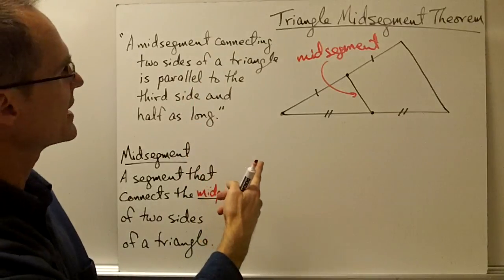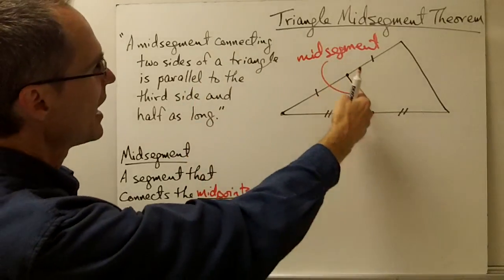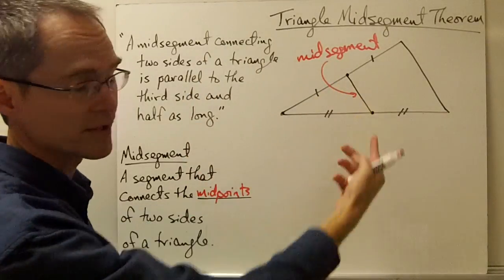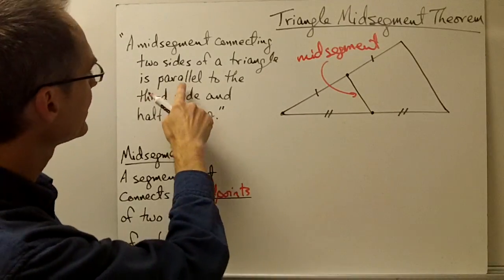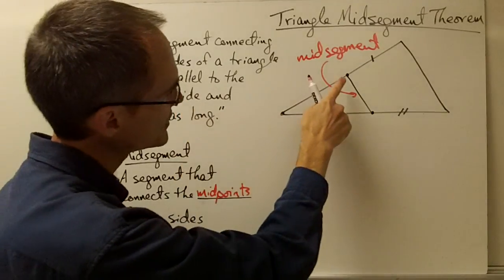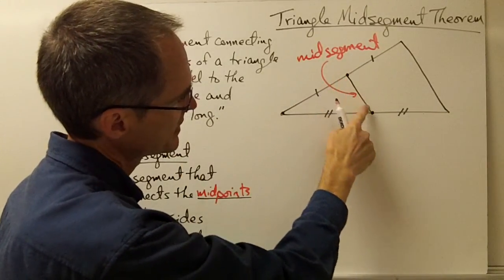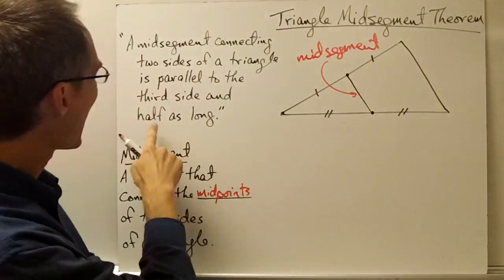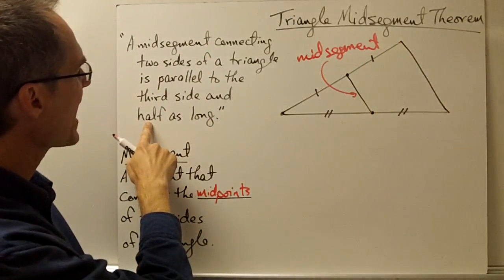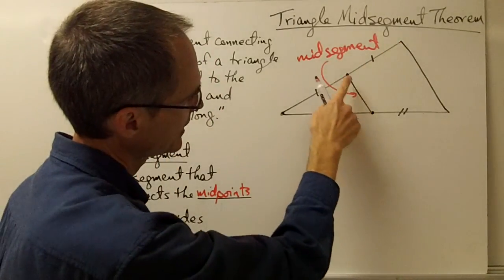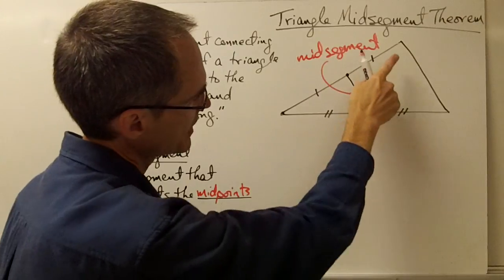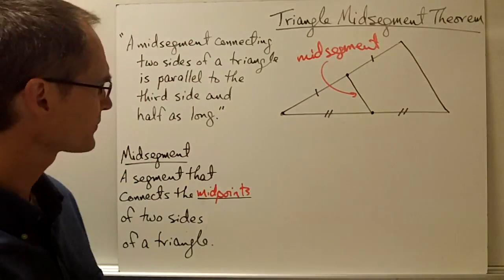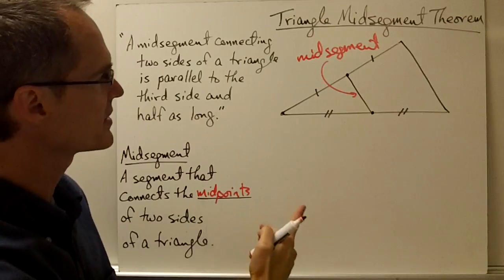This theorem says that a mid-segment, which connects any two sides of a triangle, is parallel to the third side, and it's half as long — so the length of this mid-segment is half the length of that third side.